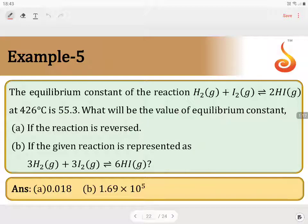So the answer of (a) is 0.018 and (b) is 1.69 times 10 to the power of 5.